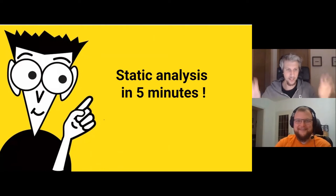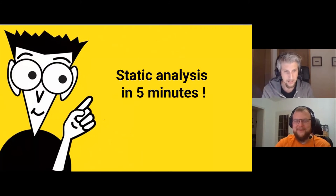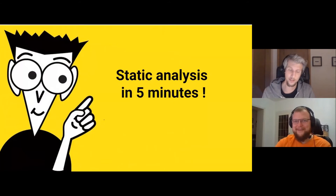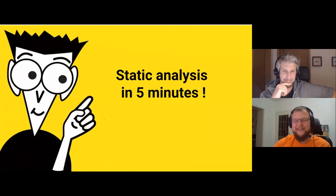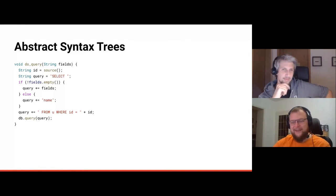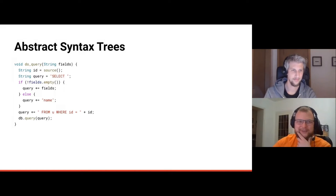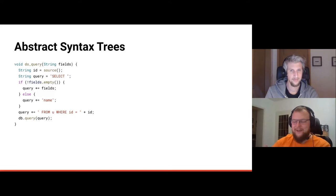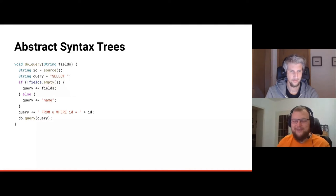To explain how to smash two companies' technologies together and get something better, you need to understand static analysis. Malte has the challenge of explaining that in five minutes. First, some terminology: an abstract syntax tree (AST) is a representation of source code in a tree structure. It's a necessary first step for any kind of analysis — you parse the source text into a form that's easier to analyze.